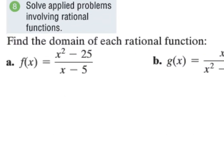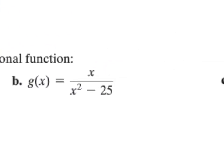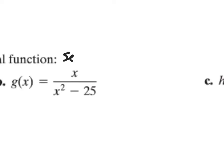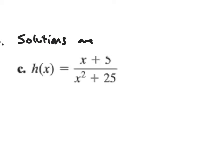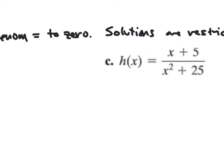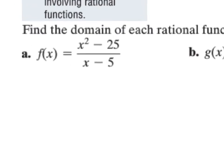So when we're finding the domain, what we want to do is we want to set the denominator equal to zero. And then our solutions to that are restricted in our domain. This is nothing new — we've been doing this in a lot of these sections so far.